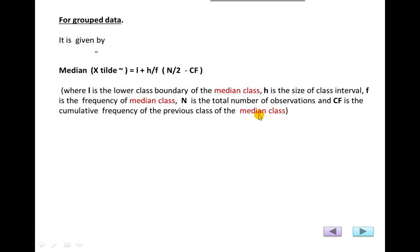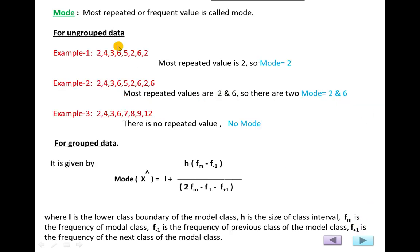The third method is mode. The definition of mode is the most repeated or most frequent value. For ungrouped data: in the first example, the data is 2, 4, 3, 6, 5, 2, 6, 2 — the value 2 occurs 3 times, so mode = 2. In the second example, both 2 and 6 occur the same number of times, so there are two modes. In the third example, there is no repeated value.